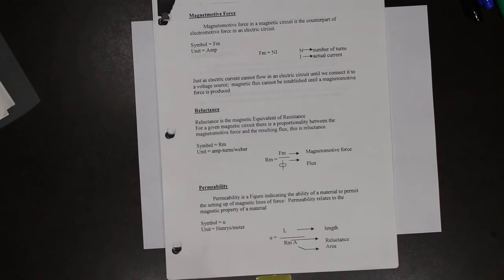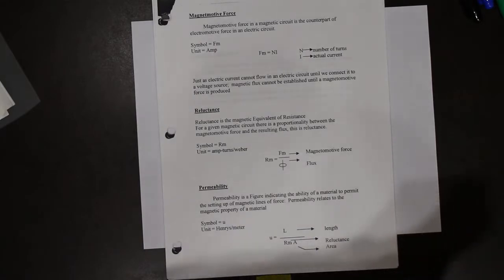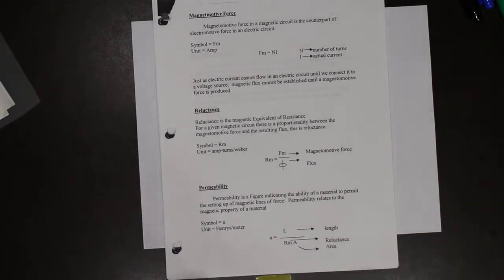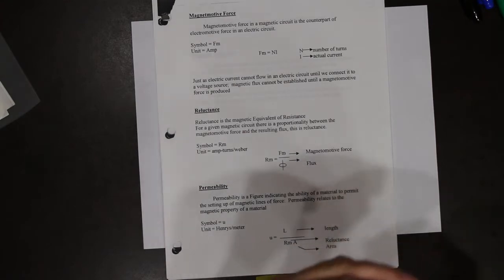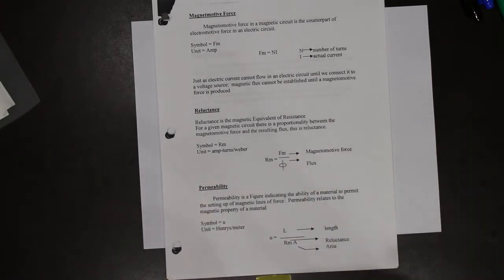Reluctance is the magnetic equivalent to resistance. In every electric circuit there is a resistance to the flow of current. In a magnetic circuit there is reluctance, which is the opposition to the flow of the magnetic field.